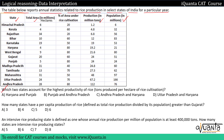For the first question: which two states account for the highest productivity of rice, defined as tons produced per hectare of rice cultivation? We are only interested in rice cultivation area. So we basically have to write down production in million tons divided by area in hectares used for rice cultivation only.